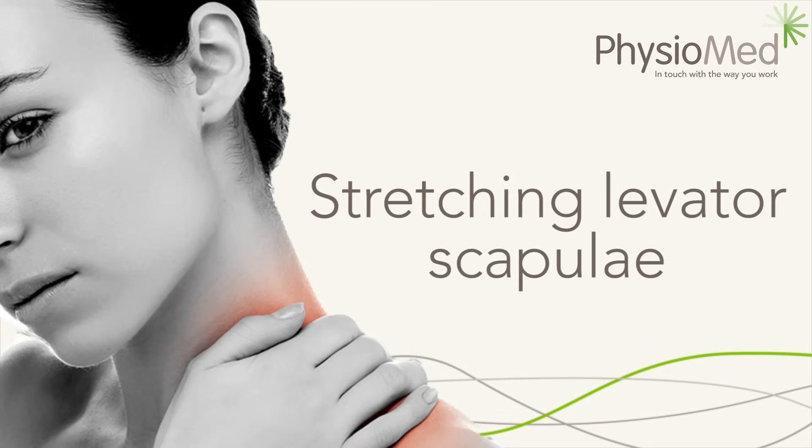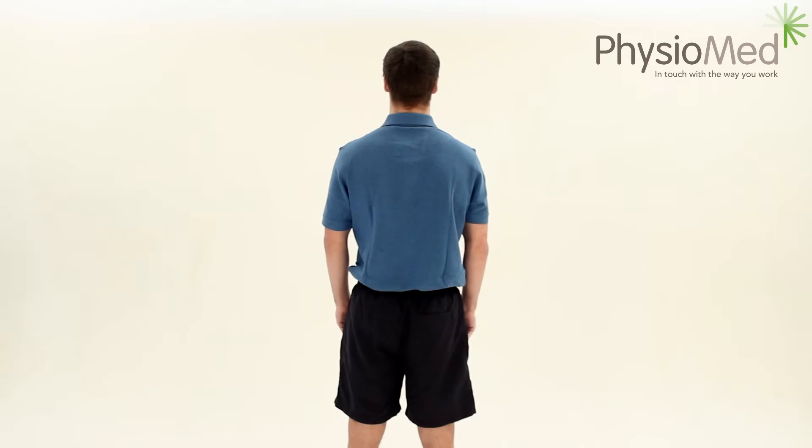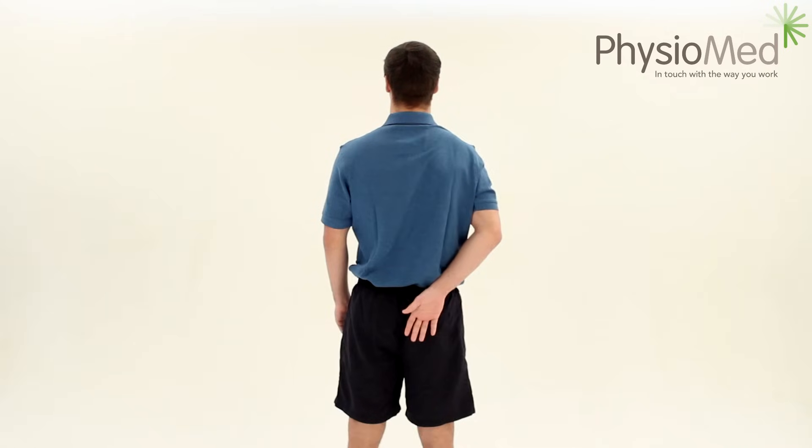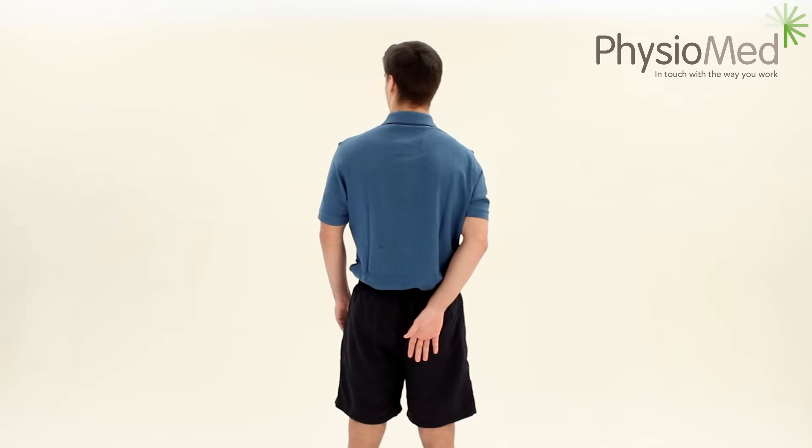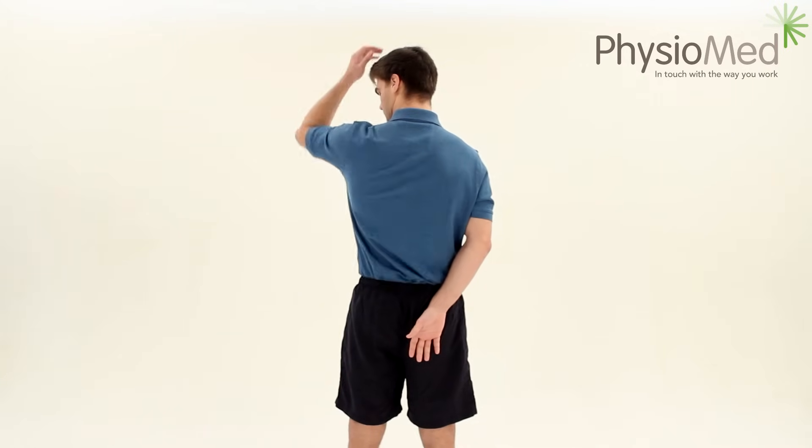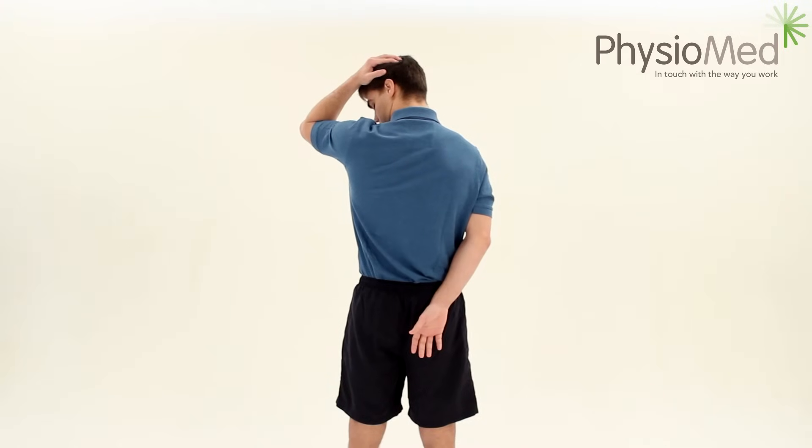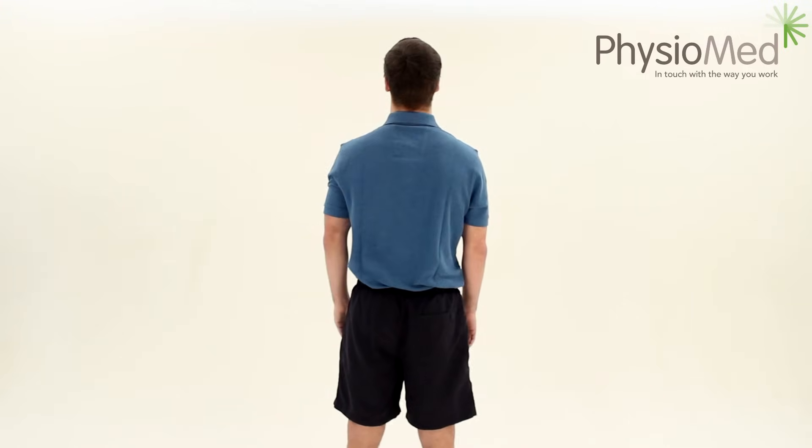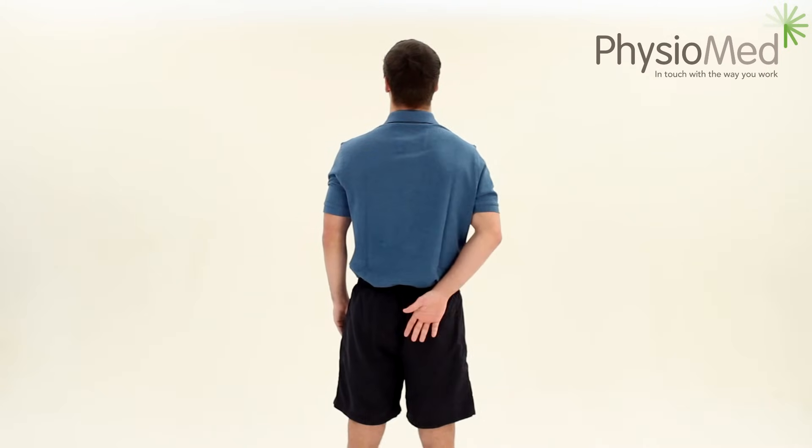Stretching Levator Scapulae. The Scapula is the shoulder blade and the word Levator means to lift. So, the Levator Scapulae muscle lifts the shoulder blade. Similar to the Trapezius muscle, this muscle can become tight over time and lead to neck problems. Again, keeping this muscle loose will reduce the likelihood of neck problems starting.